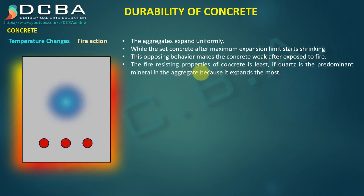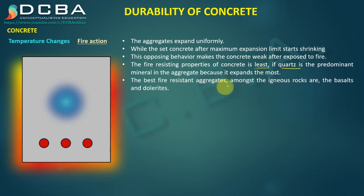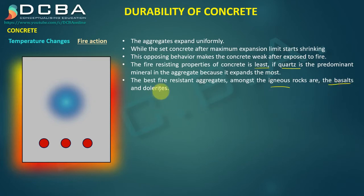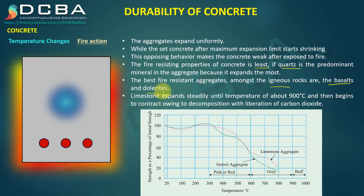The fire-resisting properties of concrete are least when quartz is the predominant mineral in the aggregate, because quartz expands the most. The best fire-resisting aggregates are igneous rocks, as they have already undergone significant heat, followed by basalts and dolerites. Limestone expands steadily until about 900°C and then begins to contract due to decomposition with liberation of carbon dioxide. A graph shows how the strength of gravel and limestone aggregates degrades with increasing temperature.